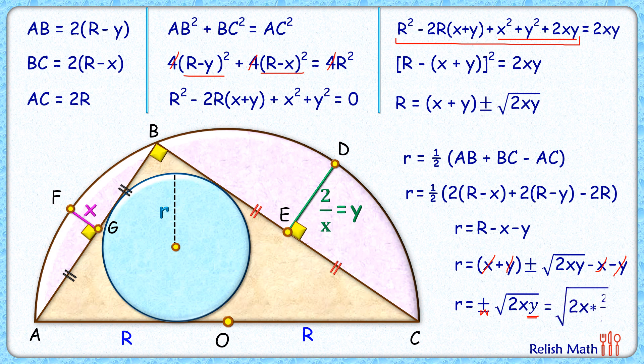So putting that value of y as 2/x will get small r as this. Here x will get cancelled. Small r is √4 or small r is 2 centimeters. And that's our answer.